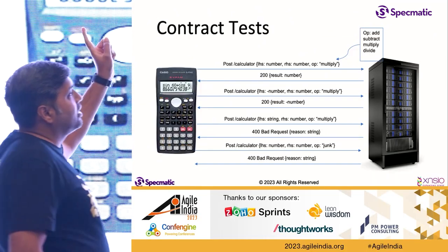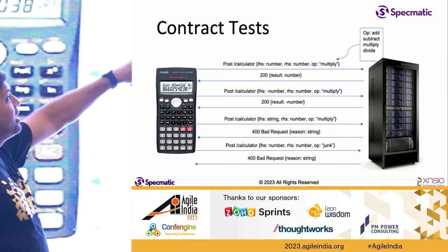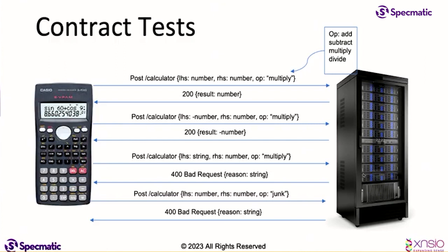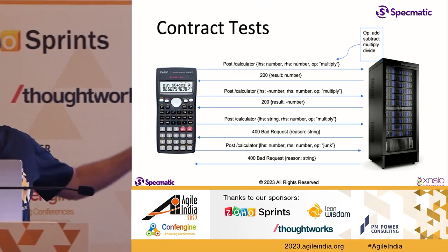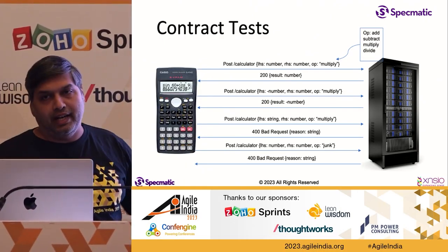You'll notice, compared to the previous example, I'm not sending actual values — they are now just representing the data types, because I don't really care about the values. I'm not asserting a specific value; I'm asserting whether the signature is being met. The value is only important as long as the data type is matching, the schema is matching, and the protocol is matching. This is an example of contract tests.